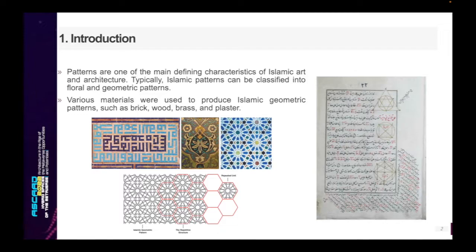This document shows that mathematicians collaborated with artisans to explore new relationships and perfect designs. The vast majority of Islamic geometric designs are found on flat surfaces. However, some geometric designs were found on non-flat surfaces, such as the geometries found on some Mamluk stones in Egypt.